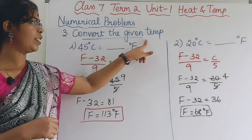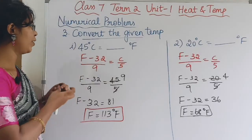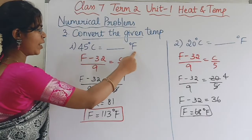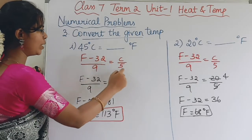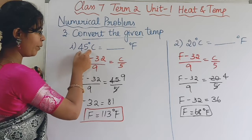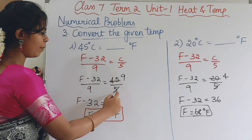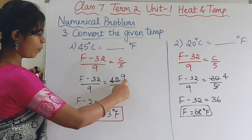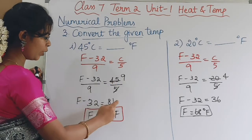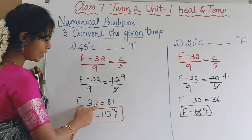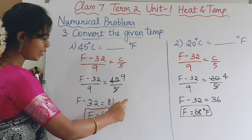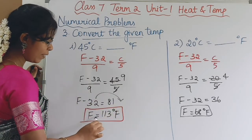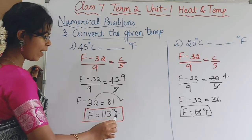Third question: convert the given temperatures. First, 45 degrees Celsius to Fahrenheit. Using the formula (F - 32) / 9 = C / 5 and substituting C = 45: (F - 32) / 9 = 9. So F - 32 = 81, giving F = 113 degrees Fahrenheit.